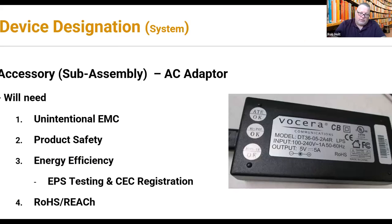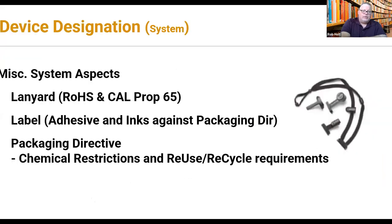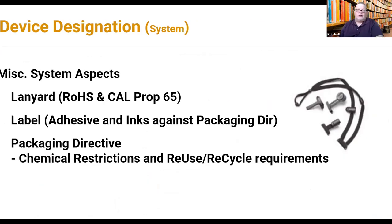The adapter also needs unintentional EMC, product safety, and energy efficiency on the EPS. As part of a battery charger it goes to the CEC, but as just an adapter it needs to be registered with Australia through E3 and Canada under the NR CAN program. It also needs RoHS, REACH, and WEEE. The lanyard may need RoHS and California Prop 65. For packaging, you have to look at adhesive and inks for the packaging directive, which covers both chemical restrictions and reuse/recycle. There's a lot that goes into getting a product ready to offer for sale.